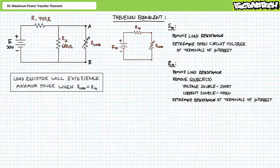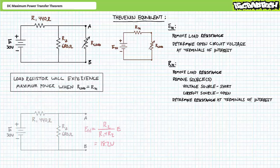We need to solve for two properties: the Thevenin's equivalent voltage and the Thevenin's equivalent resistance seen by the variable load resistor. To solve for the Thevenin's equivalent voltage, we remove the load resistor and determine the open circuit voltage. With the load removed, the open circuit voltage at terminals A and B is the voltage across resistor R2. Applying the voltage divider rule, the Thevenin's equivalent voltage seen by the variable load resistor is 18.2 volts.